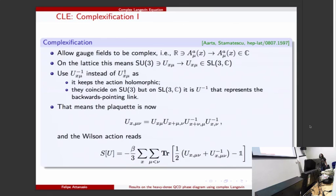If you are on SU(3) those two definitions coincide. The plaquette is now written like this - instead of U daggers just put U inverses - and the Wilson action is written in this form.